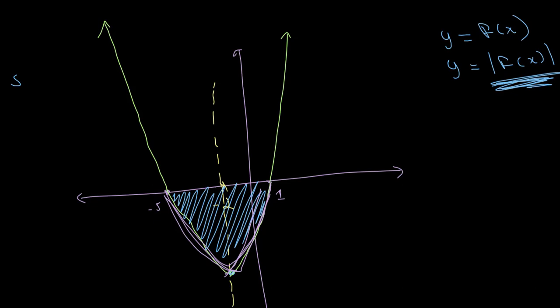And how do we reflect it? Well, if this point over here is (minus 2, minus 9), up here, we simply take the point (negative 2, positive 9). Negative 2, positive 9.